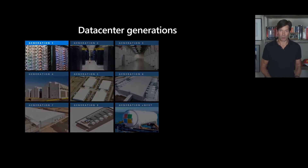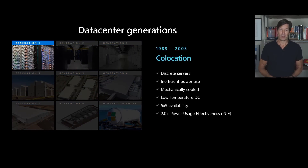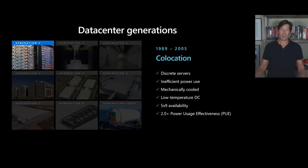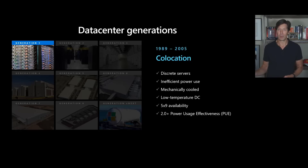Starting back in generation one — the colo era for Microsoft — we were deploying discrete servers of all different types into colo facilities that were mechanically cooled, operated at low temperature, and delivered five-nines availability with redundant power to every server. With this colo approach and no focus on efficiency, our PUE was 2.0 or higher. This isn't far off what most enterprises are experiencing today, because most enterprises still operate in this colo manner.